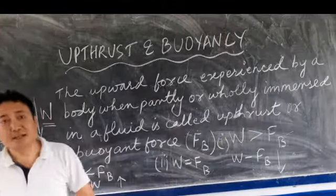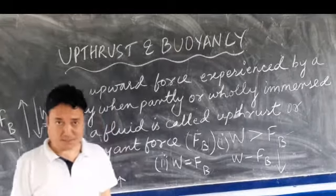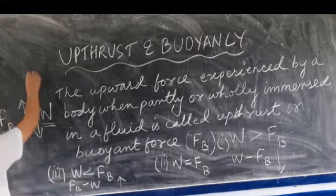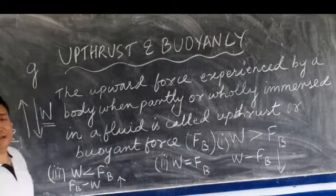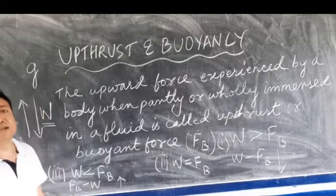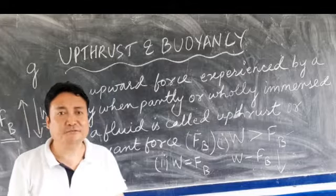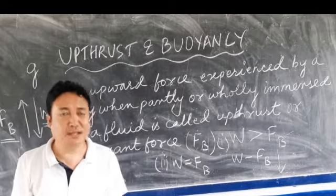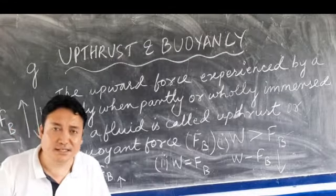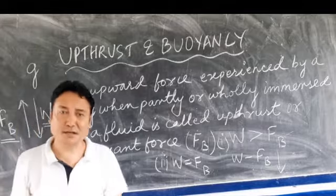Property three: the larger the value of acceleration due to gravity (g), the greater the upthrust. So these are the three factors of upthrust: larger volume gives greater upthrust, greater density of fluid gives greater upthrust, and greater value of g gives greater upthrust.